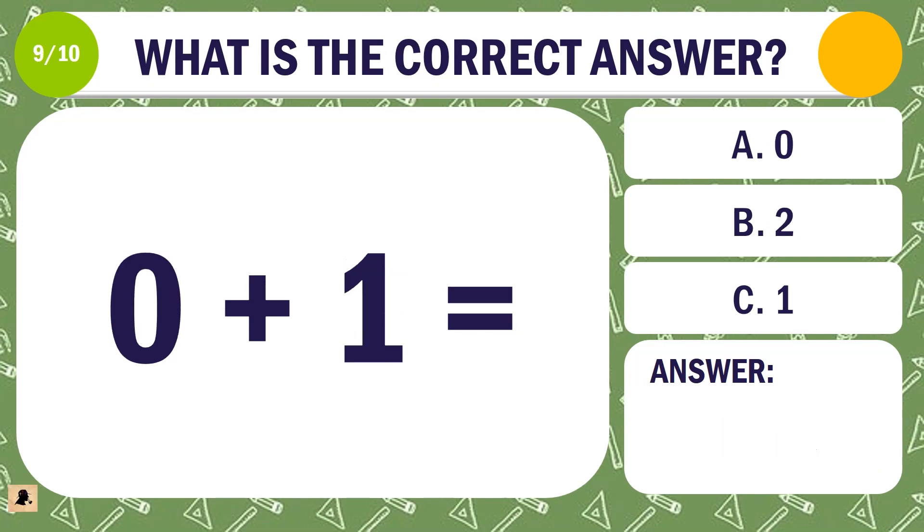Question 9. What is the correct answer for 0 plus 1? A. 0. B. 2. Or C. 1.